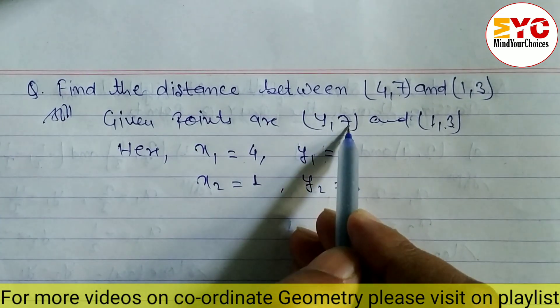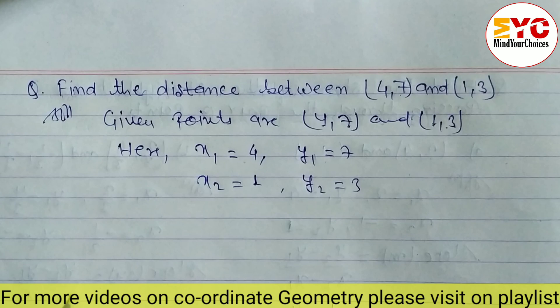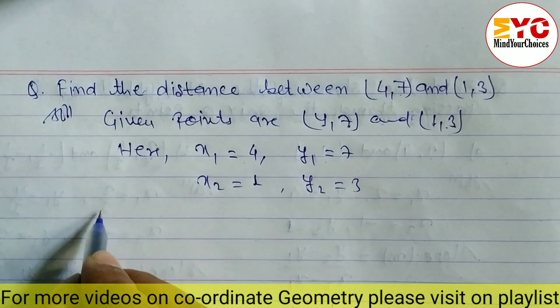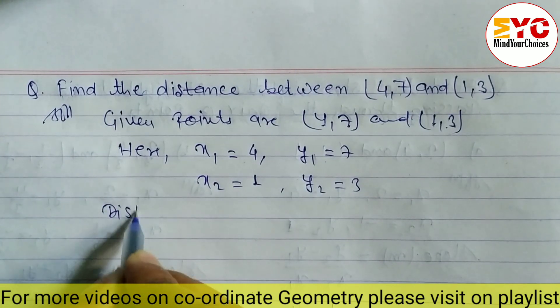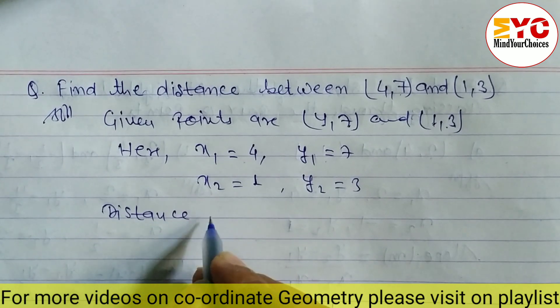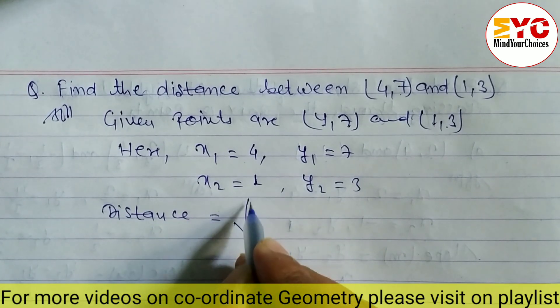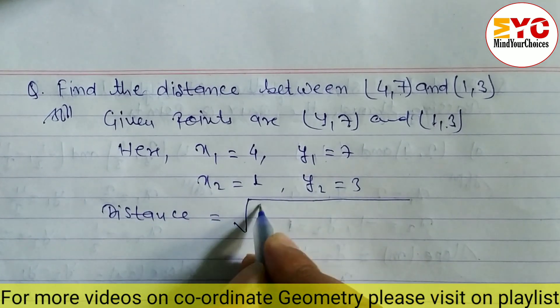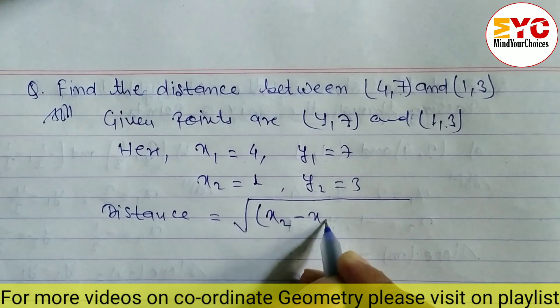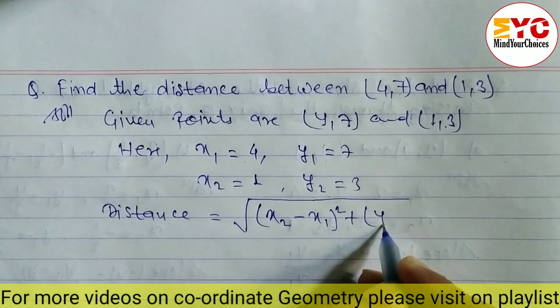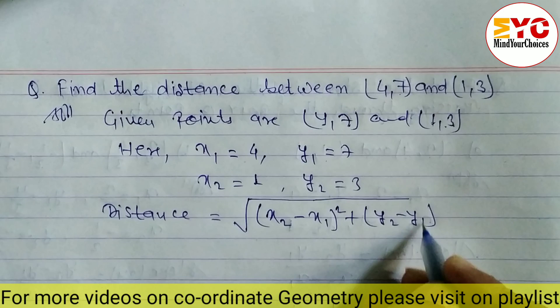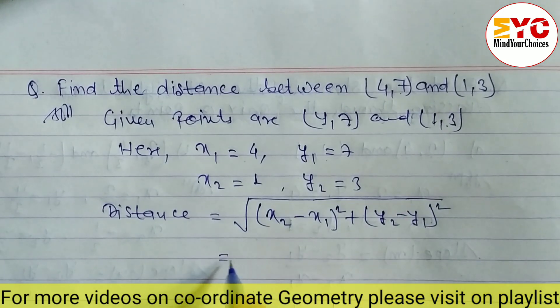Using the distance formula, the formula is: square root of [(x2 - x1)² + (y2 - y1)²]. We have to put the values into this formula.